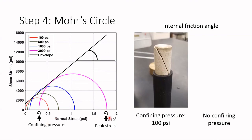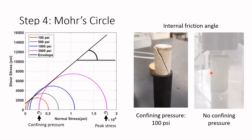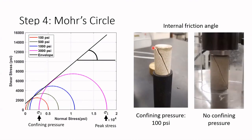The peak stress is our sigma one and the confining pressure is our sigma three. Comparing this data with other results, the fracture angle predicted from the confining pressure can be confirmed against what we observe. We'll see you next time.